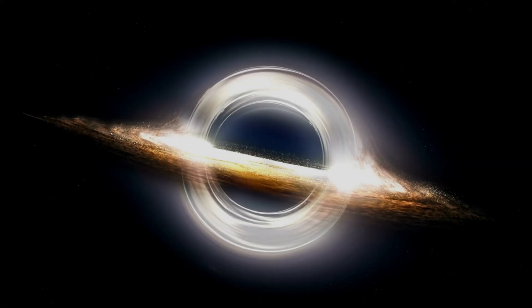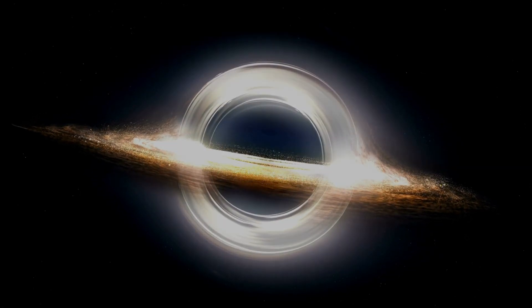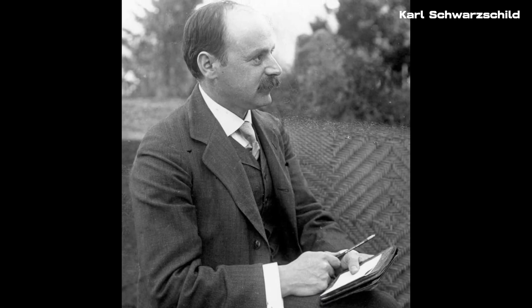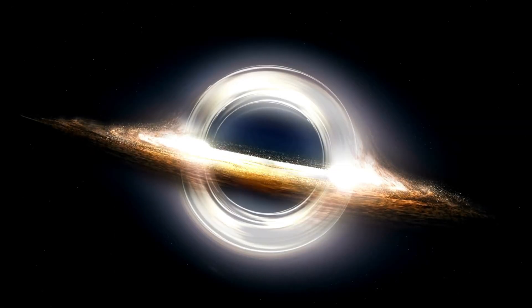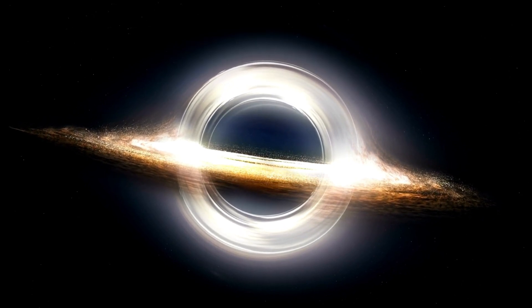This theory laid the groundwork for the idea that something like a black hole could exist. Paradoxically, Albert Einstein believed that their existence was impossible. However, it was Carl Schwarzschild who first described a mathematical solution representing a black hole.